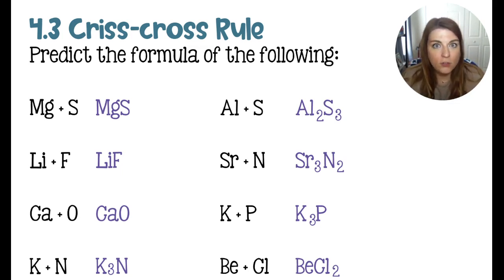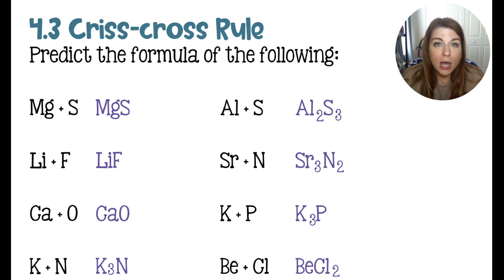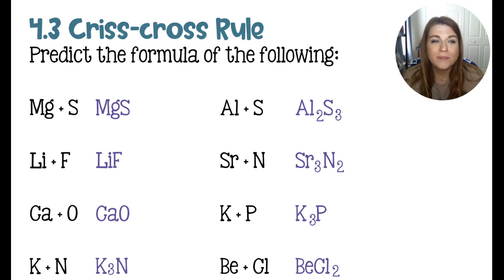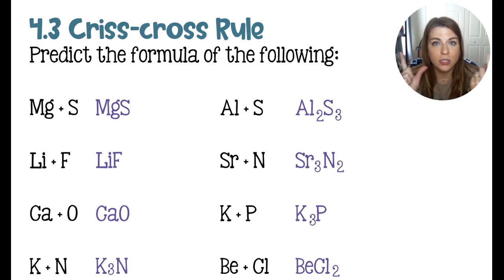Lithium and fluorine each have a charge of one, so we don't write any subscripts — they're imaginary ones. Calcium and oxygen are similar to magnesium and sulfur with a plus two and minus two charge, which also reduces. That's because magnesium and calcium are in the same group, and sulfur and oxygen are in the same group on the periodic table, so their bonding pattern is very similar.